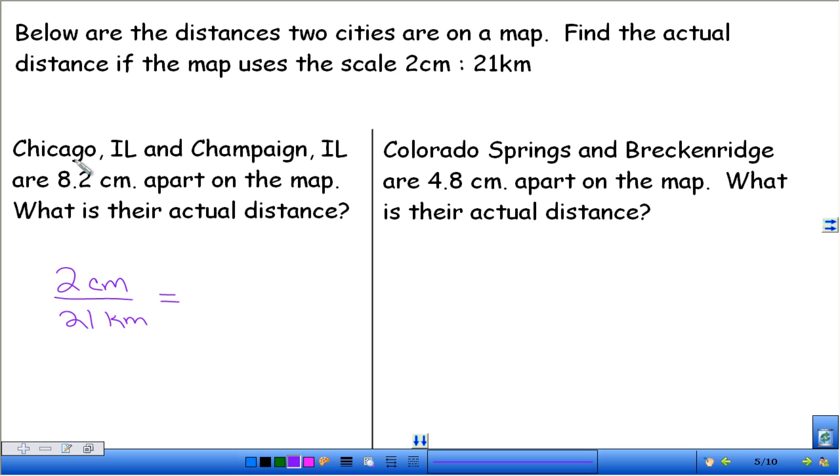So we need to set this equal to. Let's read what we have up here. So Chicago, Illinois, and Champaign, Illinois are 8.2 centimeters apart on the map. What is their actual distance? So when we set this up, since we have centimeters in our numerator up here, we have to have centimeters in our numerator up here. That way, when we go through and solve this, we're going to solve for the actual distance, which is the distance in kilometers. So go ahead and take a second to solve that one on your own. So cross-multiply.